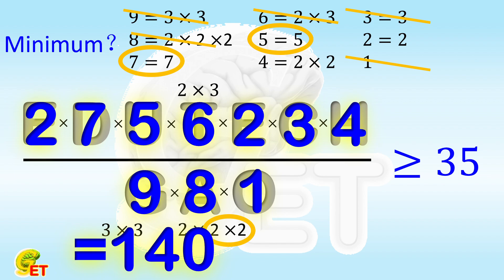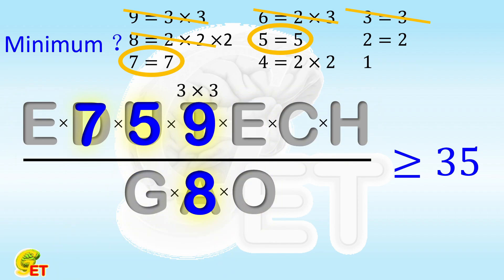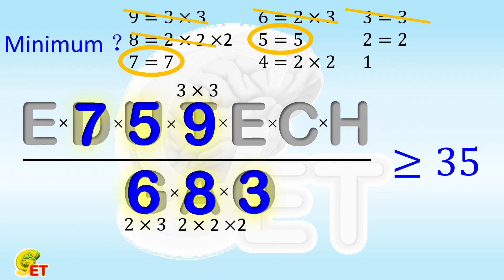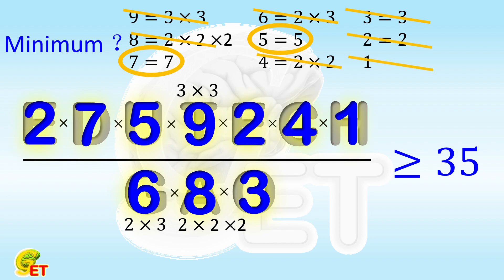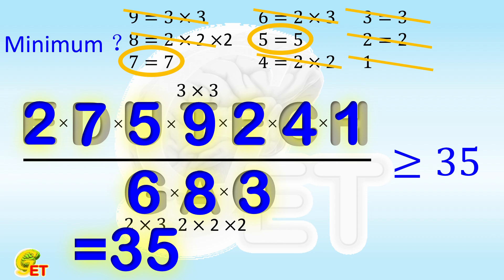Is there a result even smaller than 70? We have to consider moving one of 9 and 8 to the numerator. If we move 9 to the numerator, we should move both 6 and 3 to the denominator. So the denominator is 6×8×3, for a total of 2 factors of 3 and 4 factors of 2. In the numerator, not counting 7 and 5, there is already a 9, which contributes 2 factors of 3. We still need 4 factors of 2. The remaining 3 numbers are 4, 2, and 1 — and one must be repeated. If the repeated number is 2, that gives exactly 4 factors of 2. So the final result is 2×7×5×9×2×4×1 divided by 6×8×3, which gives 35. That's the minimum, so we don't need to keep trying any others.